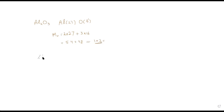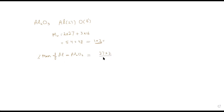Now we want to calculate the percentage mass of aluminium in aluminium oxide. We take the relative mass of aluminium, which is 27 times 2 atoms, divided by the total relative formula mass of the compound, which is 102.